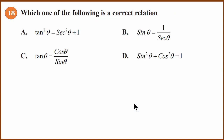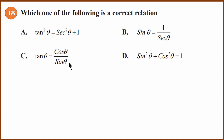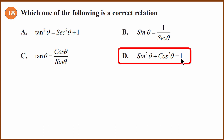Eighteenth question: which is the correct trigonometric relation? Option A: tan²θ = sec²θ + 1 is wrong — the correct form is 1 + tan²θ = sec²θ. Option B: sin θ = 1/sec θ is wrong — sin θ = 1/cosec θ. Option C: tan θ = cos θ/sin θ is wrong — that is cot θ; tan θ = sin θ/cos θ. Option D: sin²θ + cos²θ = 1 is correct. The answer is D.